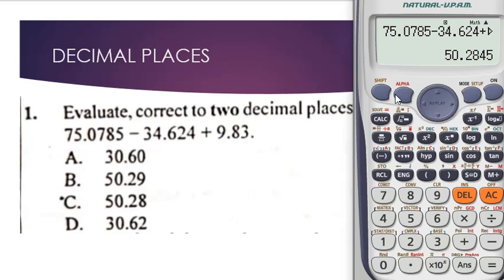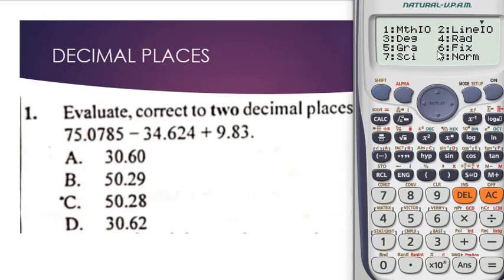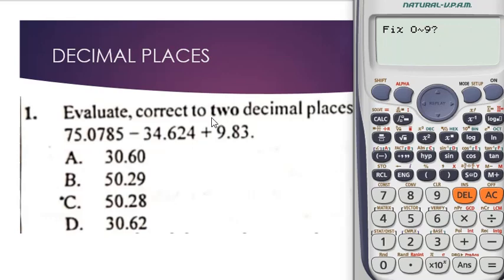To convert this answer to two decimal places, click Shift, then Mode, then click 6 — that's Fix, which is for decimal places. Click 6, then choose 2 for two decimal places. From here you can see we've arrived at the correct answer.